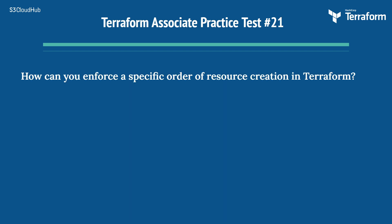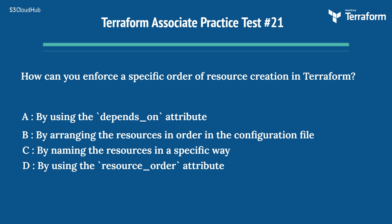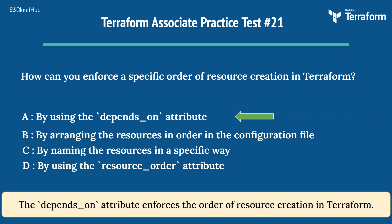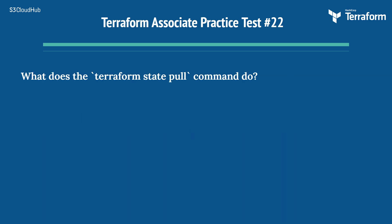The twenty-first question: how can you enforce a specific order of resource creation in Terraform? Options are: A) by using the depends_on attribute, B) by arranging the resources in order in the configuration file, C) by naming the resources in a specific way, D) by using the resource_order attribute. The right answer is Option A, by using the depends_on attribute. The depends_on attribute enforces the order of resource creation in Terraform.